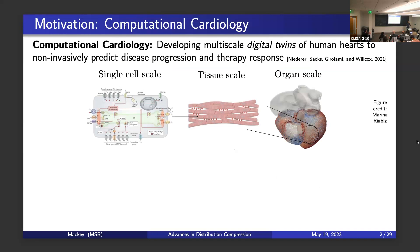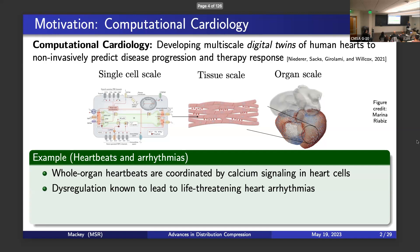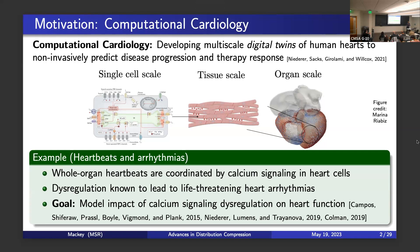The idea is that if you can simulate a patient's heart, you can understand what a therapy is going to do without having to cut them open. This is necessarily a multiscale process — to simulate a heart, you need to understand what's happening at the single cell level. People are interested in the relationship between calcium signaling and irregular heartbeats called arrhythmias. Whole organ heartbeats are coordinated by calcium signaling, and dysregulation can lead to life-threatening heart disease.